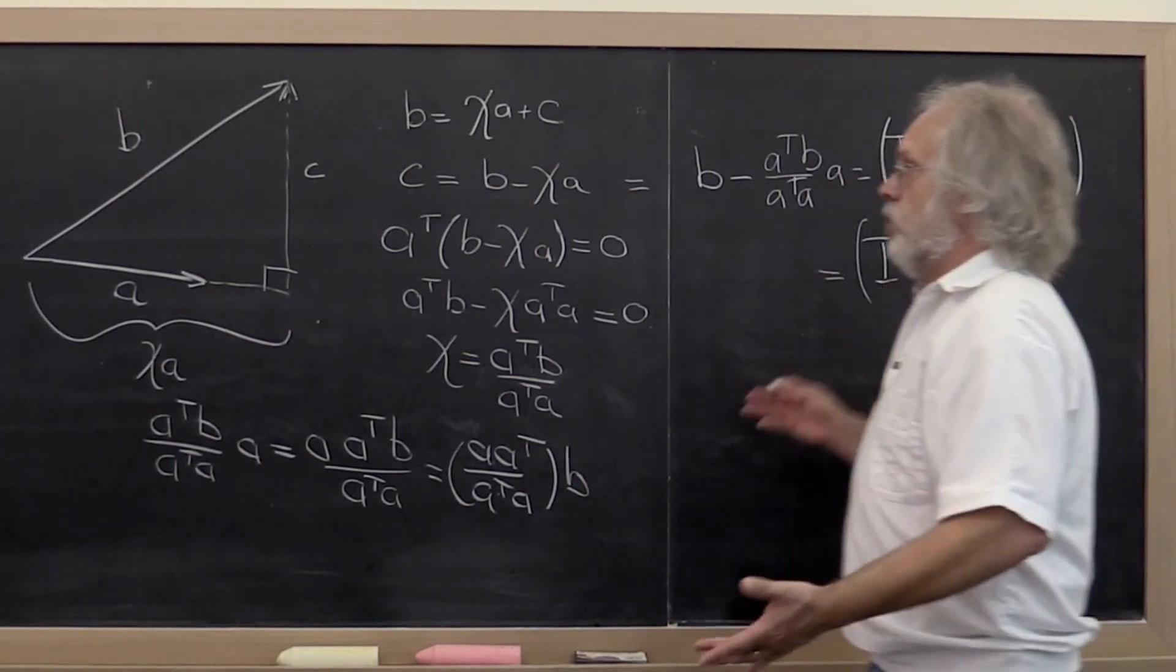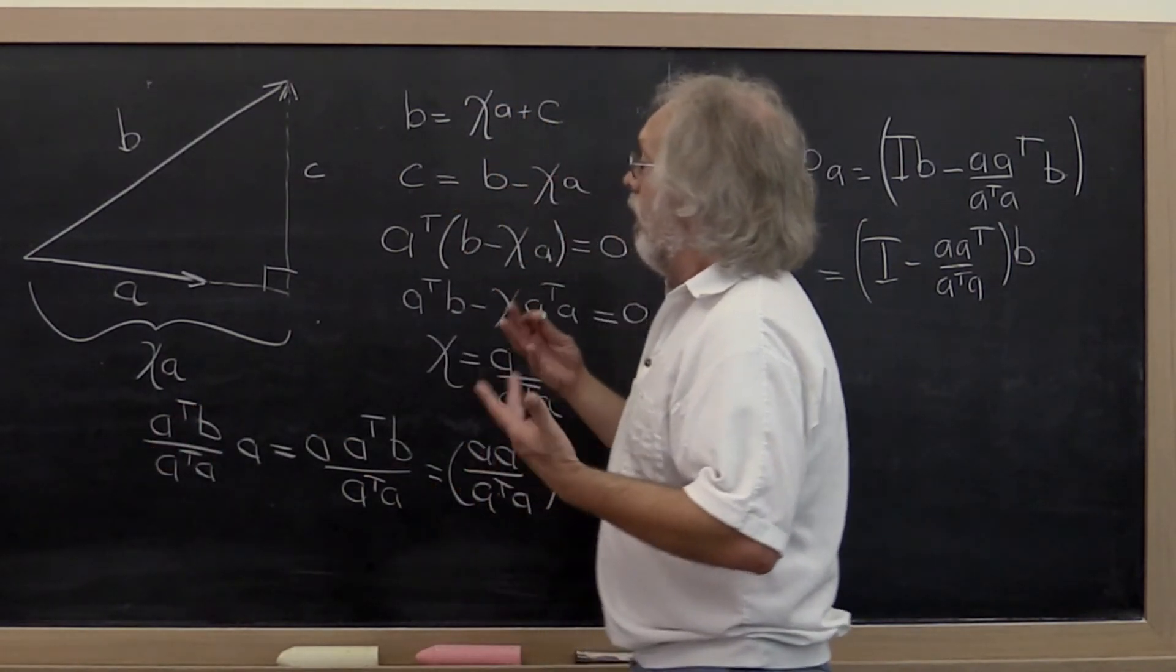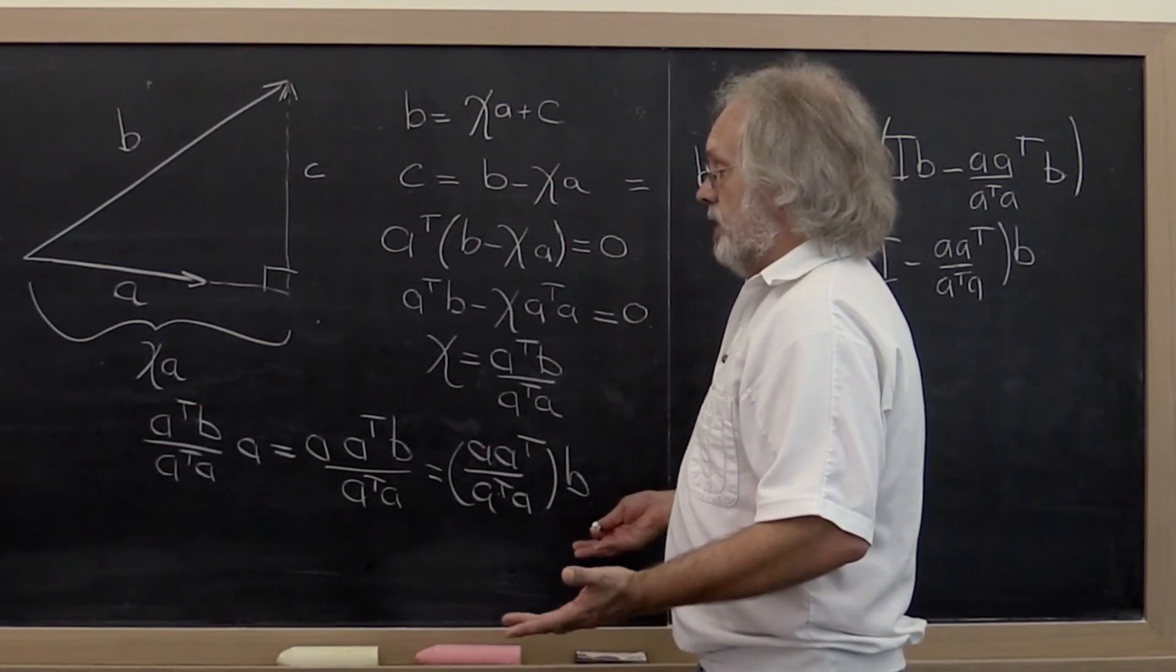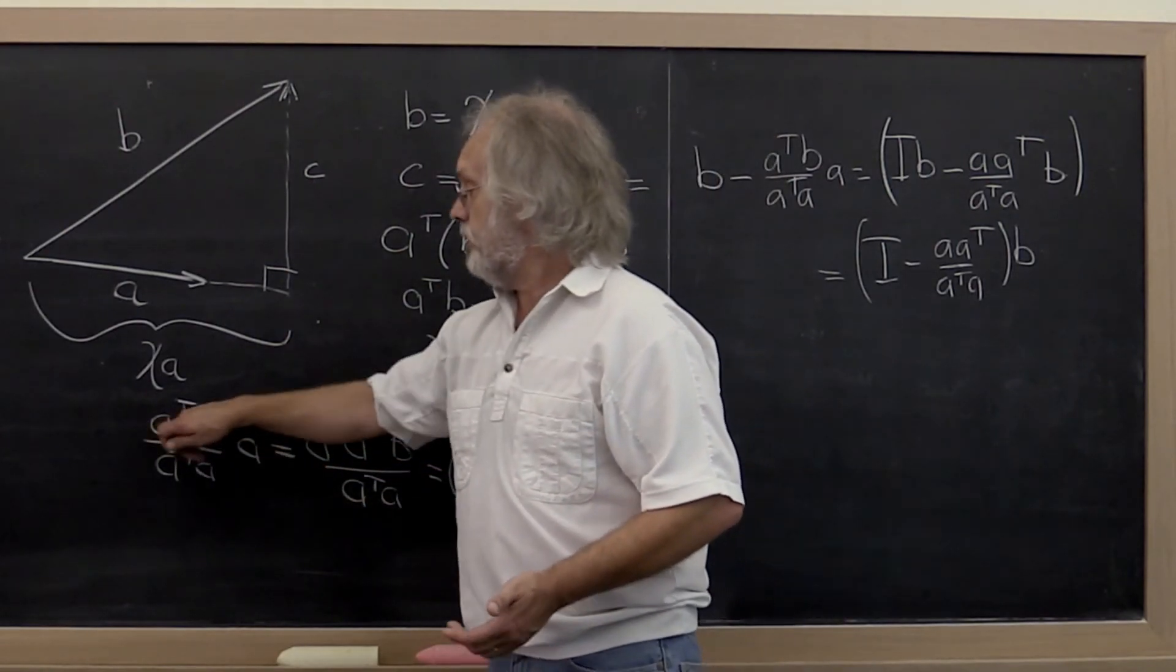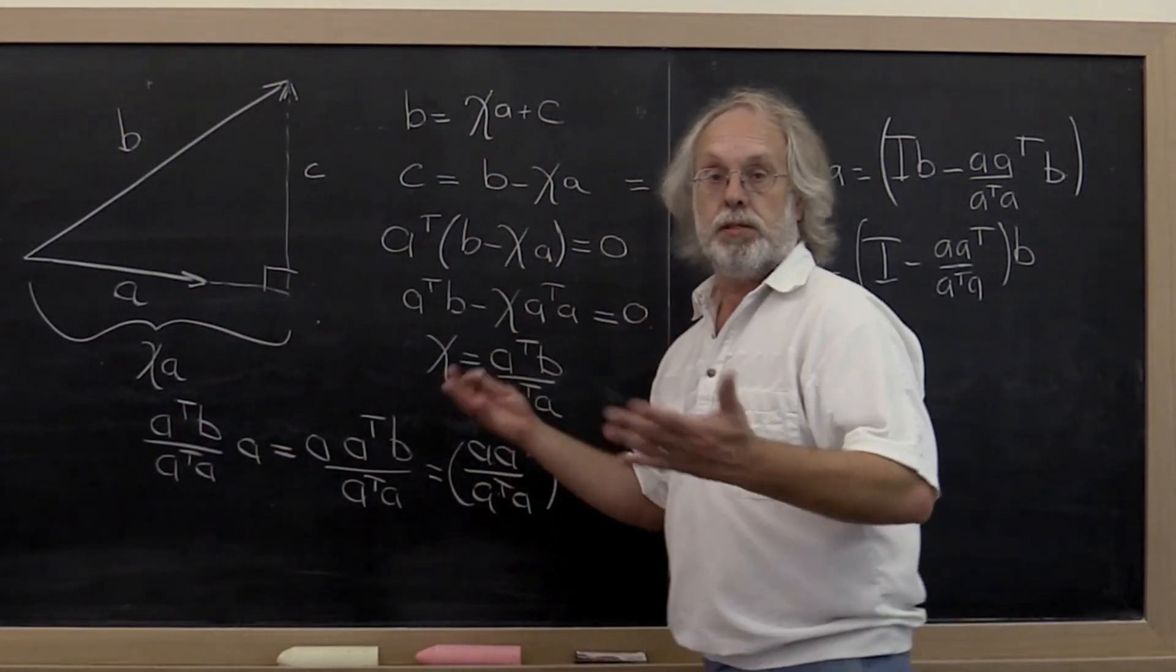Now all of this works too if the vectors A and B are complex valued, except that then every time you take a dot product, you need to take the Hermitian dot product. But the story is the same.